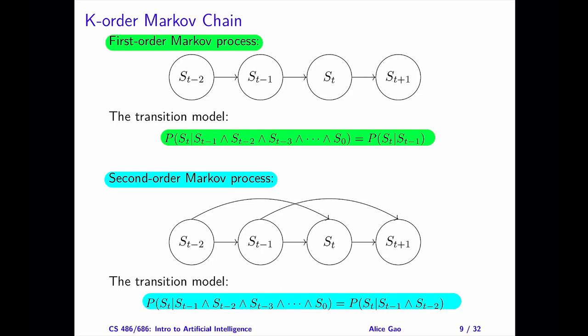We can generalize this to any fixed value of k. In a k-order Markov chain, each state depends on the previous k states.